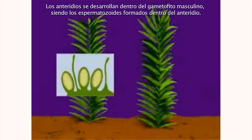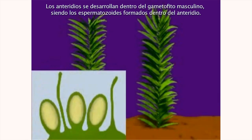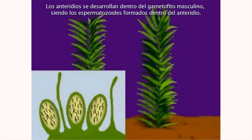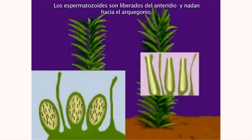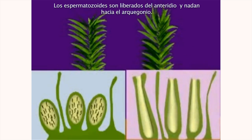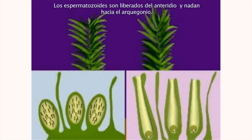The antheridium develops on the male gametophyte, and sperm form within the antheridium. The archegonium develops on the female gametophyte, and an egg forms within the archegonium.